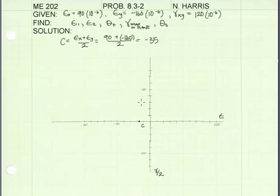Now the next step is to plot the x-face. That's the x-face of the point. So the x-face will have a epsilon x value of 90 and a gamma xy value of 120 divided by 2, so 60.